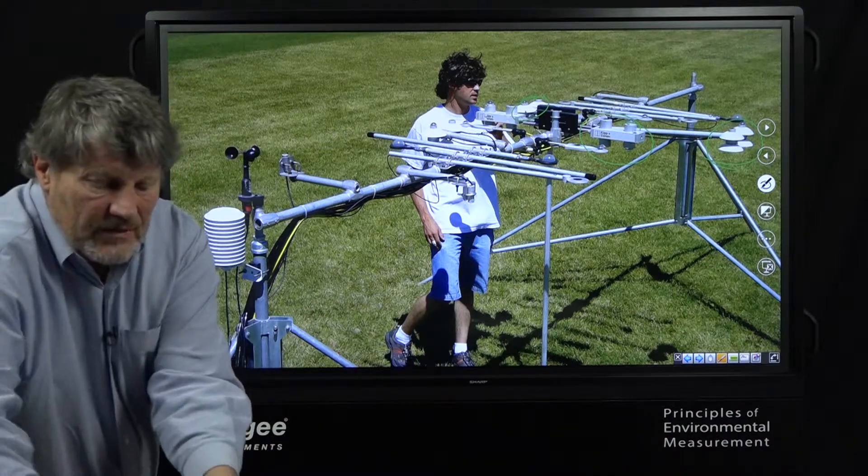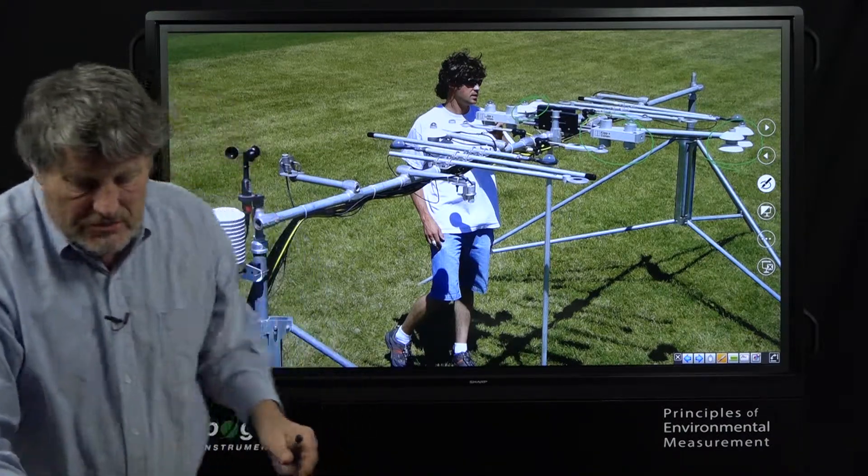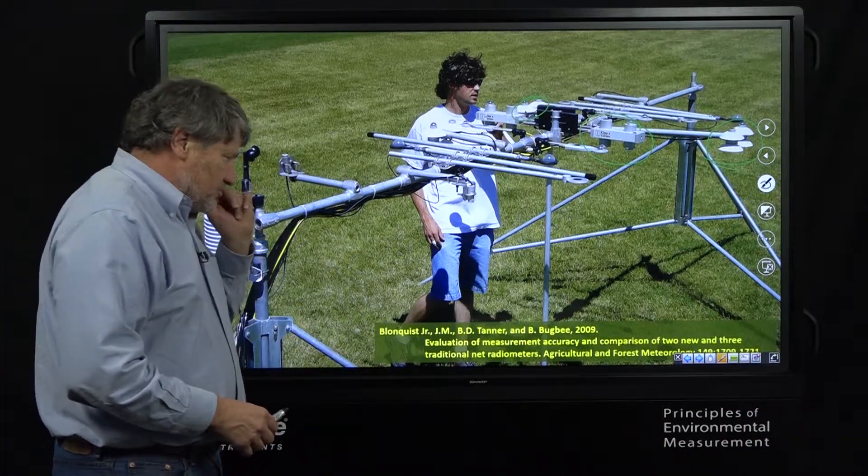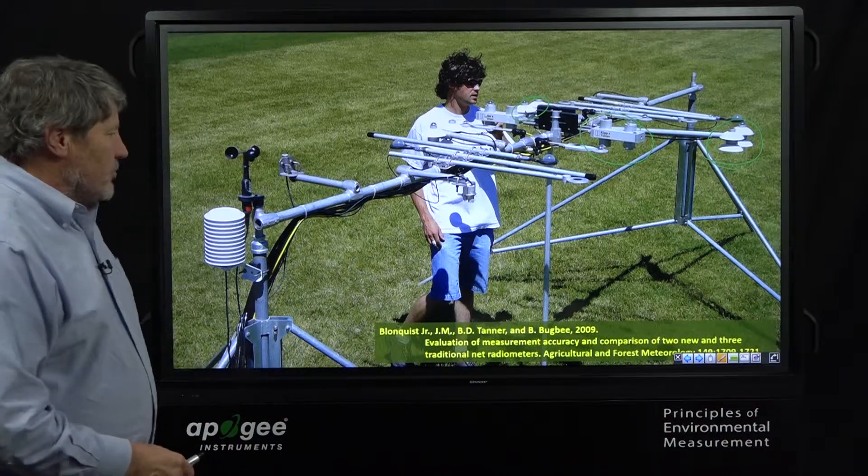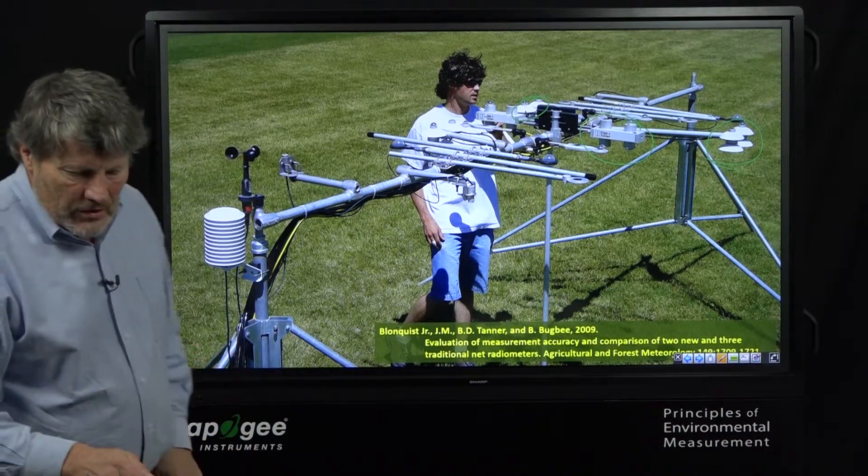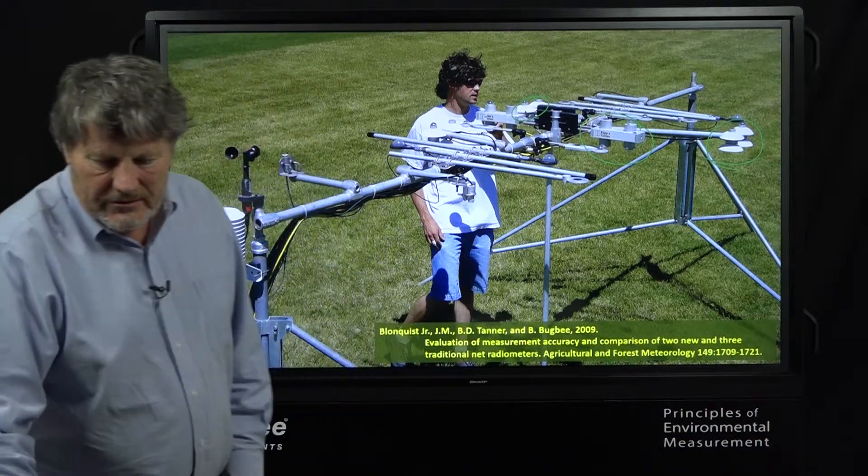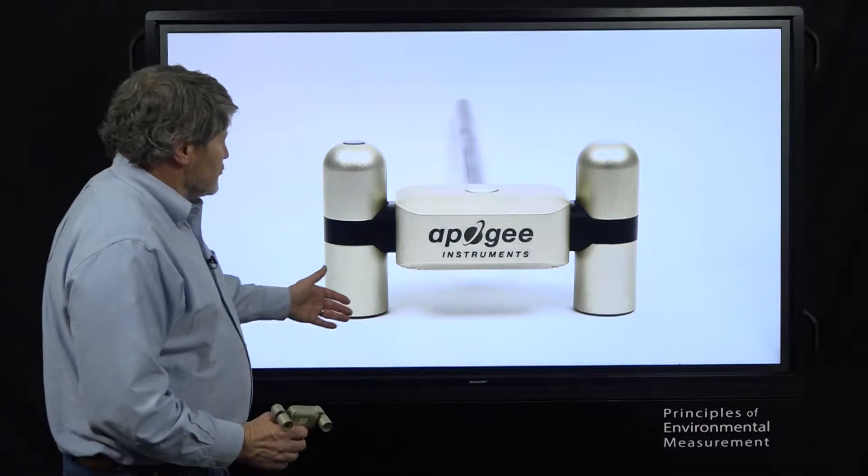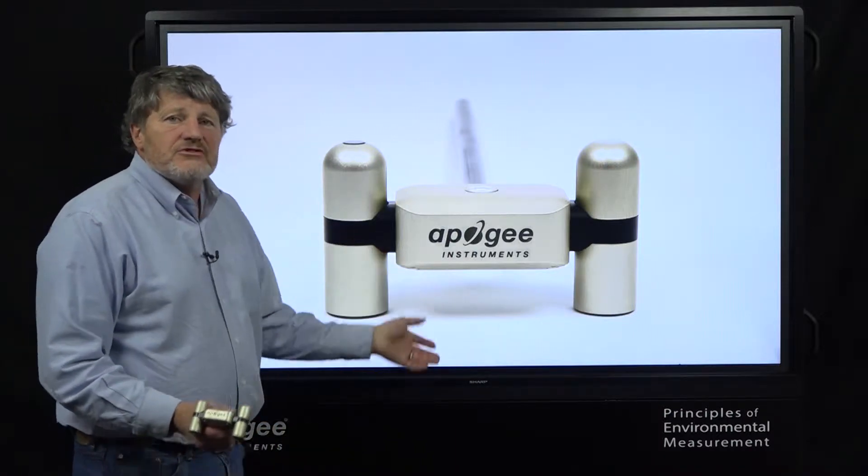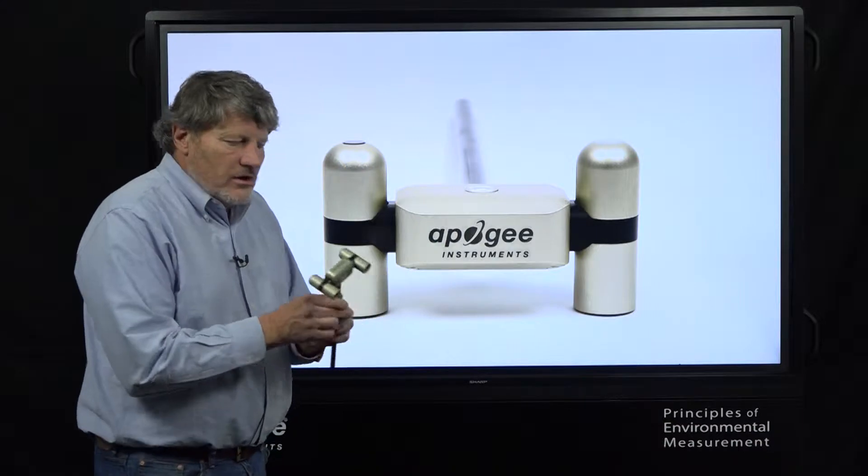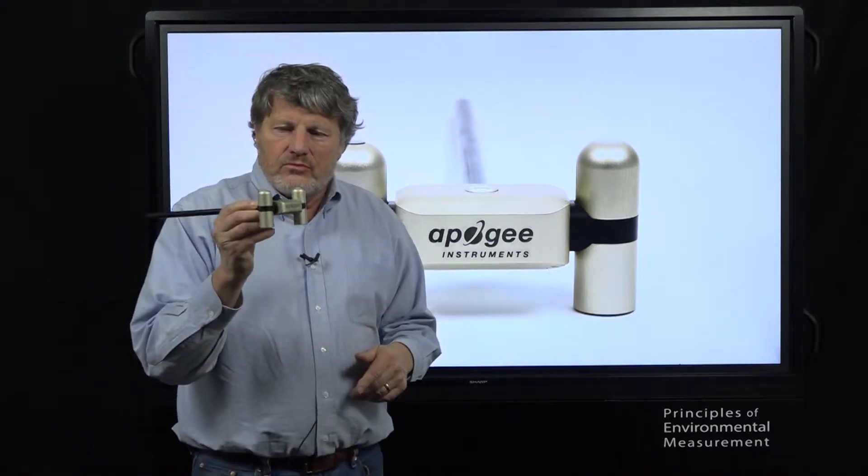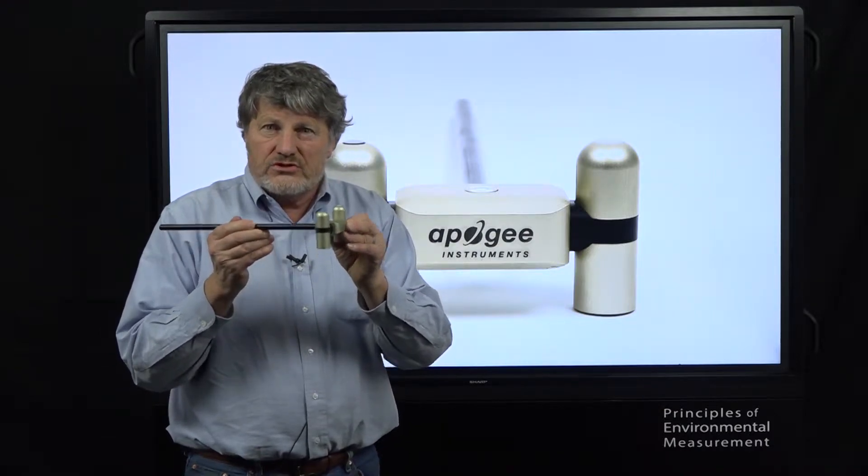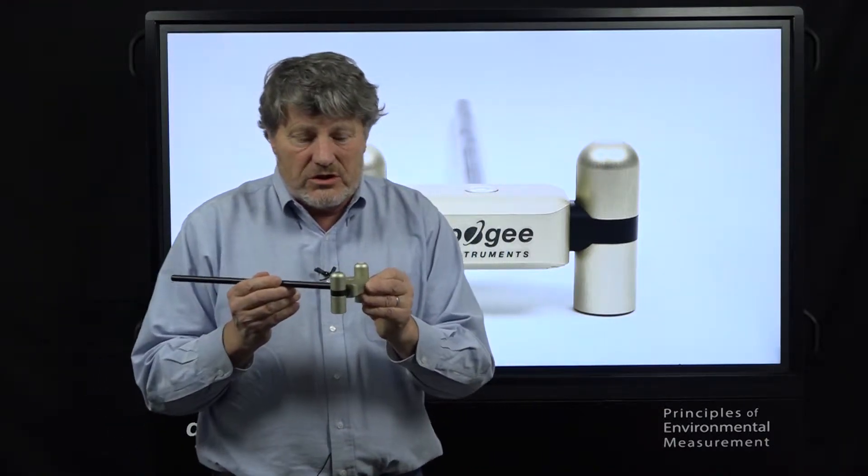Now this work was published here and you can pause this and get the paper. You can get it on the Apogee website. Accuracy of net radiometers. So what does our instrument look like? Here's a picture of it and you might think this is life-size because these instruments have historically been big and after a lot of work we were able to reduce the size and weight of this instrument. So we're quite proud of being able to do this because it makes it far easier to mount and to use.